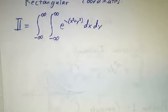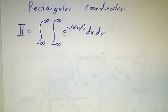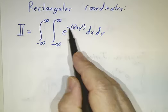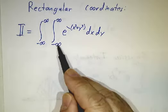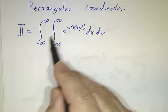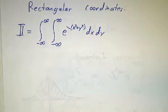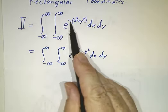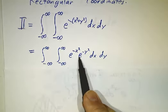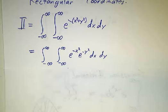So if we try doing this in rectangular coordinates, we say, oh, we want to integrate e^(-(x²+y²)), dA is dxdy, and over the entire plane x goes from -∞ to ∞, and y goes from -∞ to ∞. And we factor e^(-(x²+y²)) as e^(-x²) times e^(-y²). And we try to do the inner integral.